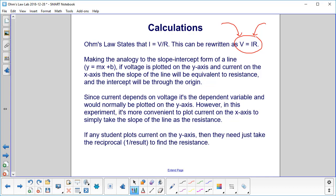However, if a student does plot current on the y-axis, then they just need to take the reciprocal, 1 over the resultant slope, to find the resistance.